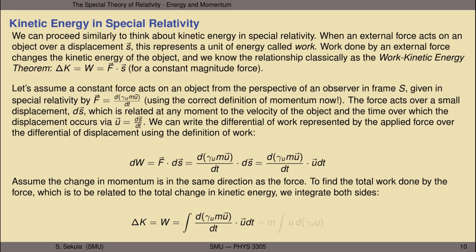To find the total work done — which relates to the total change in kinetic energy — we integrate both sides. By the work-kinetic energy theorem, the change in kinetic energy equals the work done by the force, which is the integral of the little bits of work. Pulling out constants, we wind up with mass times the integral of u times d(gamma_u · u). The dt's cancel out, leaving us with just a differential of gamma_u times u. That doesn't look like a pleasant integral, but we can get it into a more pleasing form using integration by parts.